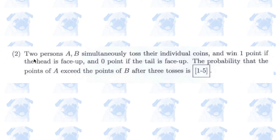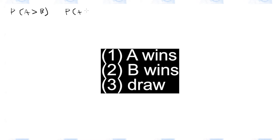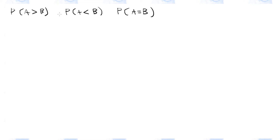Number 2. There are only three outcomes. The first outcome is that A gets more points than B. The second outcome is that A gets less points than B. And the third outcome is that A gets the same points as B. So if you add these probabilities together, they should add up to 1.